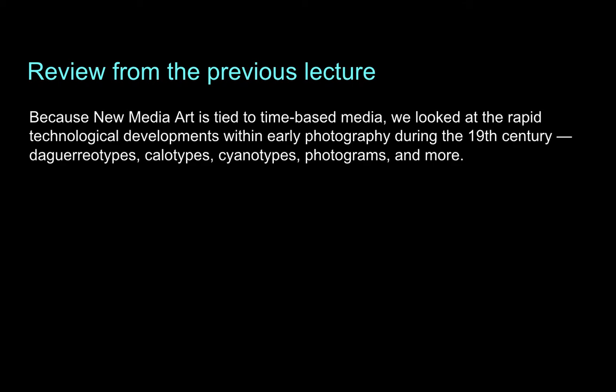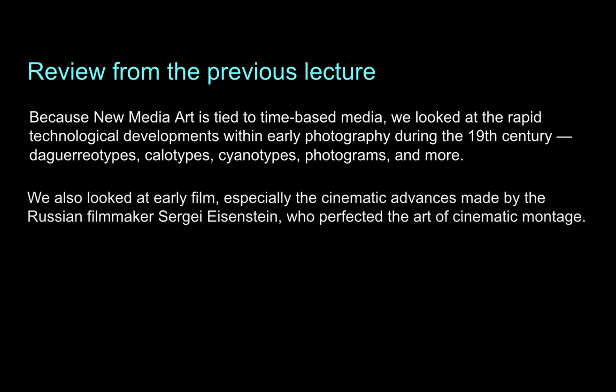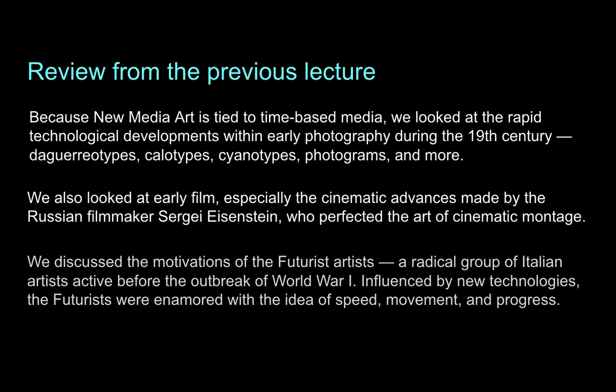As a quick review from the previous lecture, we began by looking at early technological inventions within early photography. Because new media art is tied to time-based media, we looked at the rapid technological developments within early photography during the 19th century. In particular, we looked at daguerreotypes, callotypes, cyanotypes, photograms, and several other examples. We also looked at early film, especially the cinematic advances made by the Russian filmmaker Sergei Eisenstein, who perfected the art of cinematic montage. And lastly, we discussed the motivations of the Futurists, a radical group of Italian artists active before the outbreak of World War I.